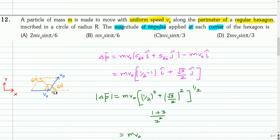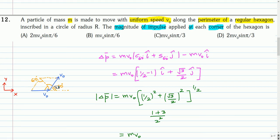The particle is moving along the hexagon. At each corner, before turning, the velocity will be V₀ in one direction. Since it is a hexagon, the center of the hexagon makes an angle of 60 degrees with the two sides. This forms an equilateral triangle, so this angle is 60 degrees. Similarly, the other triangle is also equilateral, so that angle is also 60 degrees. Therefore, this angle is 180 minus 60 plus 60, which is 60 degrees. So the angle between the velocity before and after turning is 60 degrees.